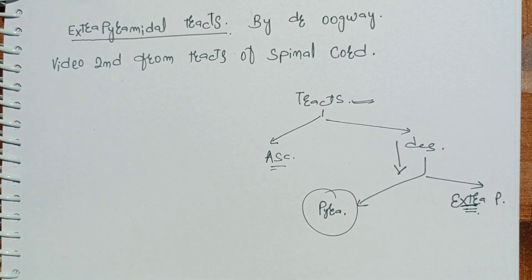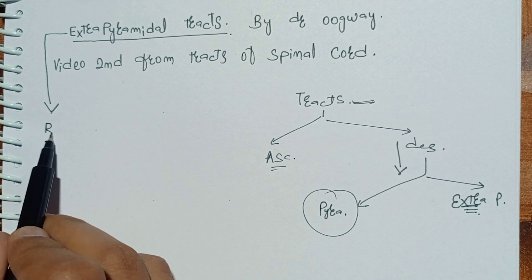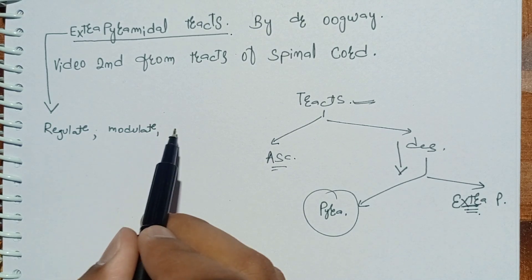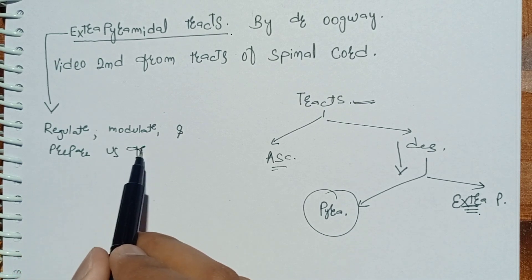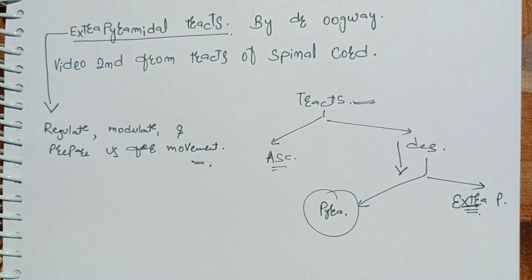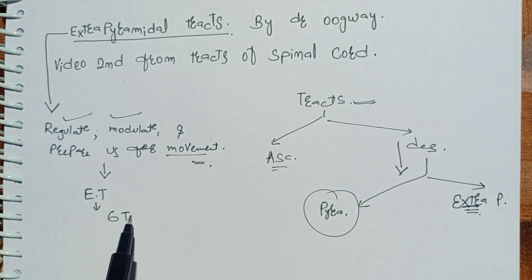So what are extrapyramidal tracts? This extrapyramidal tract system — they regulate, they modulate, and they prepare for movement. That is the definition: extrapyramidal tracts or the extrapyramidal system regulate, modulate, and prepare for movement.